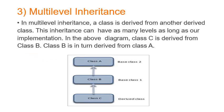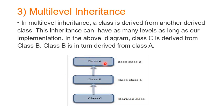In multi-level inheritance, a class is derived from another derived class. This mechanism can have many levels depending on our implementation. In this diagram, class C is derived from class B, and class B is derived from class A. So C is derived from B, B is derived from A. A is the superclass or base class, B is also a base class, and C is the derived class.